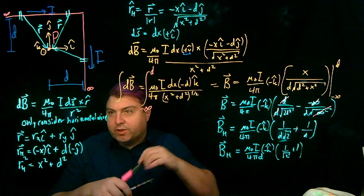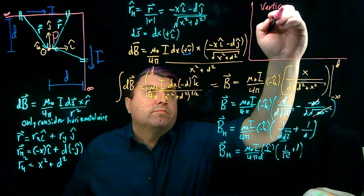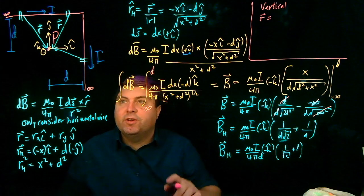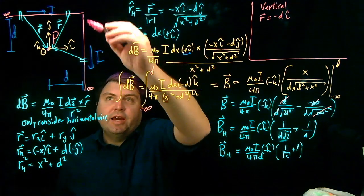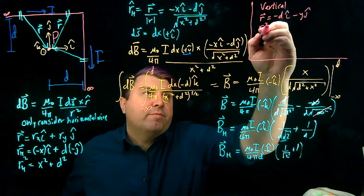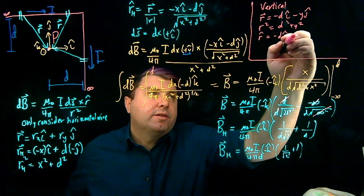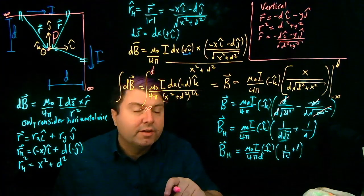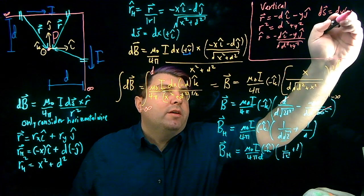So what about the vertical section? Well, the vertical section, our r vector is going to be very similar. In the x direction, I have to go negative d in the i hat direction for all different slices. And then I have, for the y direction, have to go minus y j hat. So then I have my r squared is going to be d squared plus y squared. My r hat is going to be negative d i hat minus y j hat over the square root of d squared plus y squared. And then my ds is going to be dy in the negative j hat.